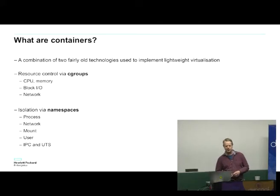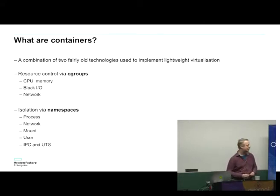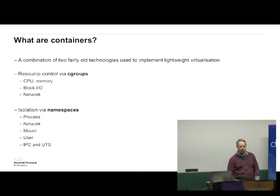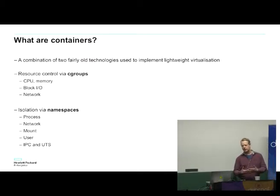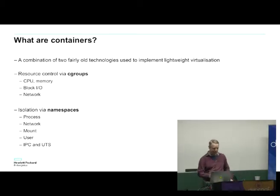For network, you can give a process or a group of processes their own IPv4 or IPv6 networking stack that's completely isolated from the rest of the machine. You can have a different mount namespace between processes and user — you can have a different set of user IDs, group IDs, and IPC and UTS. So inter-process communications and UTS refers to host name and domain name type of things. Not only can you isolate processes from one another using all these methods, you can share them as well. It's very fine-grained, like control groups. It's the combination of control groups and namespaces that make containers work on Linux.